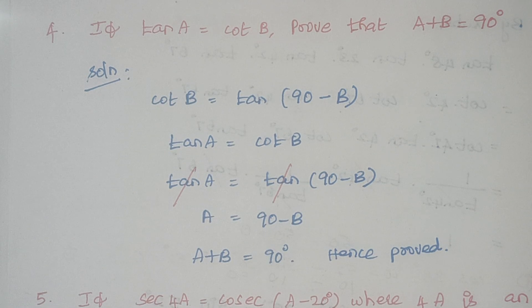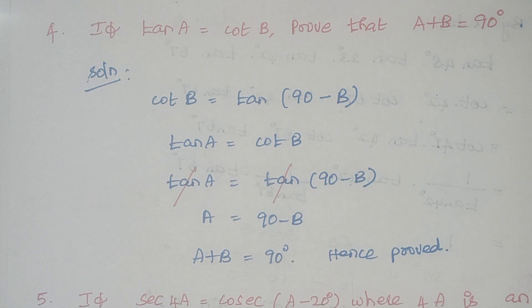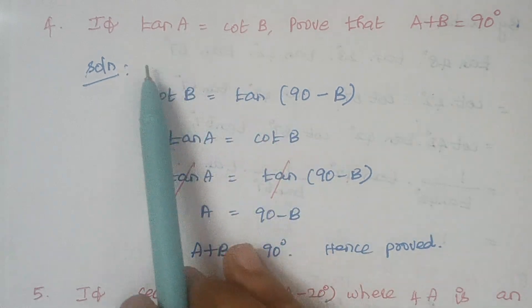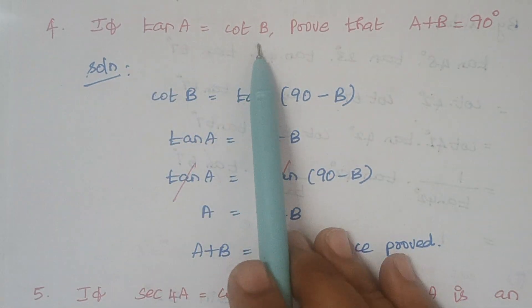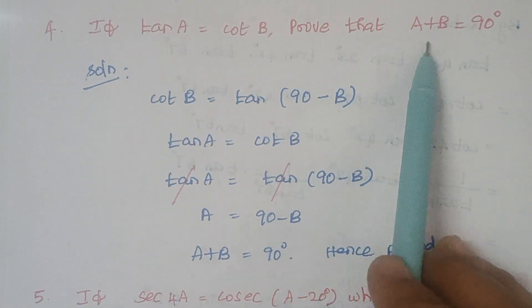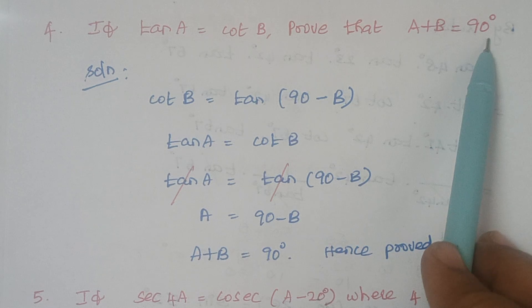Hello viewers, I am Kausalya. Today we are going to solve problems in exercise 8.3, problem number 4. If tan A equals cot B, prove that A plus B is 90 degrees.